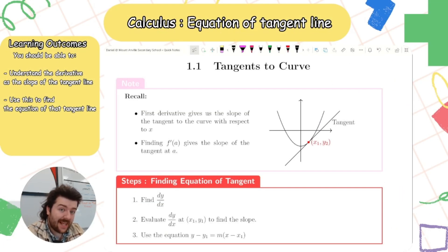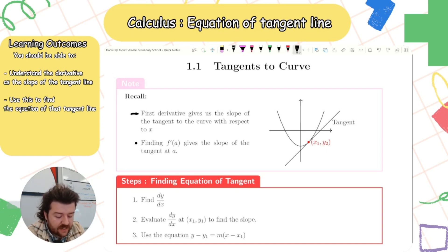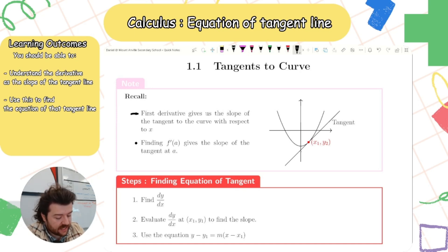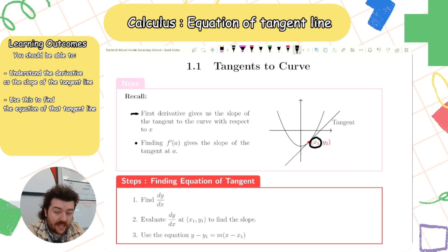In this video we're looking at the equation of the tangent line. What we need to remember about the relationship between tangents and calculus is that the first derivative gives us the slope of the tangent to the curve at that value of x. So finding the first derivative and substituting in a value of x will give us the slope of the tangent at that value of x.